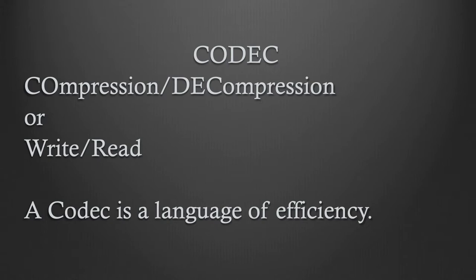One example is Apple ProRes. They have very specific codecs: ProRes Proxy, ProRes LT, ProRes 422, ProRes HQ, and ProRes 4444 and some variations of 4444. They are also releasing a ProRes RAW. It is a very robust, very efficient codec. Computers read it and write it very easily. Until recently, Macs have been the only ones able to write to that codec, aside from cameras.